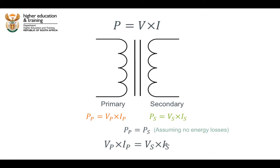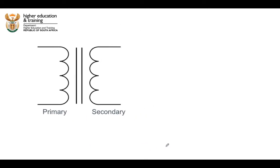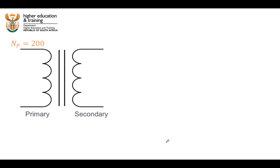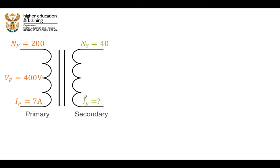Let's put this equation to use in an example. We have a primary coil with 200 turns and a secondary coil with 40 turns. We apply a voltage of 400 volts across the primary coil, and we know that the current through the primary coil is equal to 7 amps. We want to find out what is the current flowing through the secondary coil.